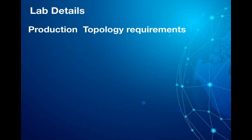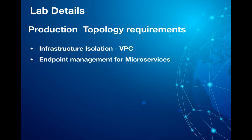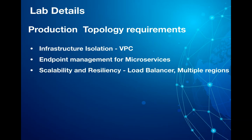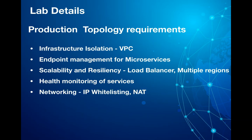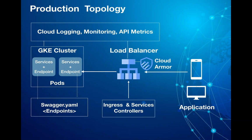To build a production-grade environment you need a host of components like a virtual private network, endpoint management for microservices, a load balancer to balance requests over various protocols, SSL configuration, health monitoring of services, network configuration like whitelisting of IPs, network address translation for outbound connections, and ensuring logging and security at various points in our application.